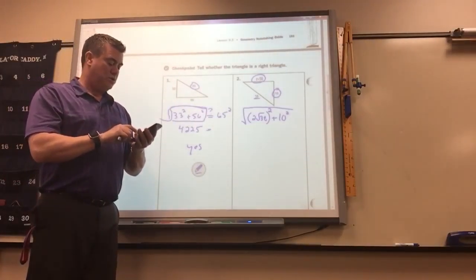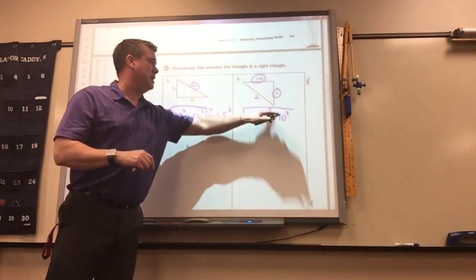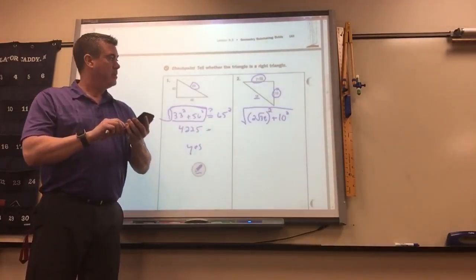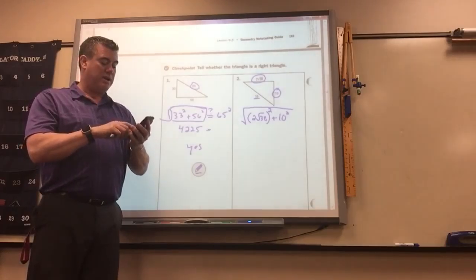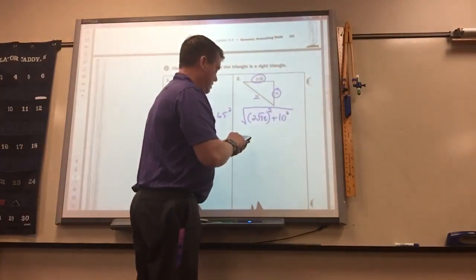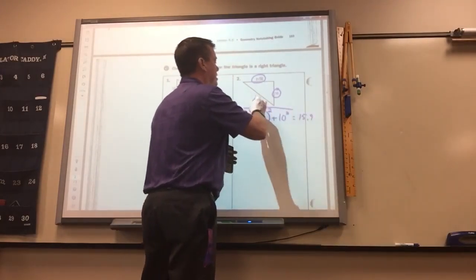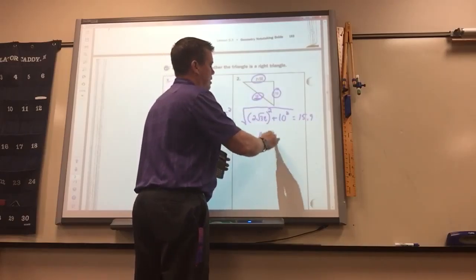So 2 times the square root of 38, and then make sure you press equals, and then you've got to square it, plus 10 squared, press equals, and then we square root the whole thing. I get 15.87. It didn't equal 16 so that's no.